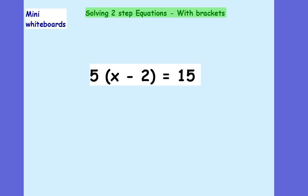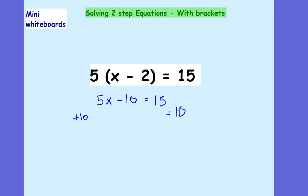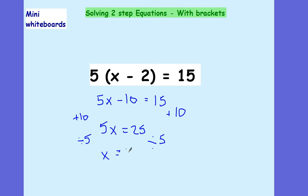What's changed? We've now got 5x take away 10 equals 15. I want to add 10 to both sides, which leaves me with 5x equals 25. I then need to divide both sides by 5, which leaves us with x is equal to 5.